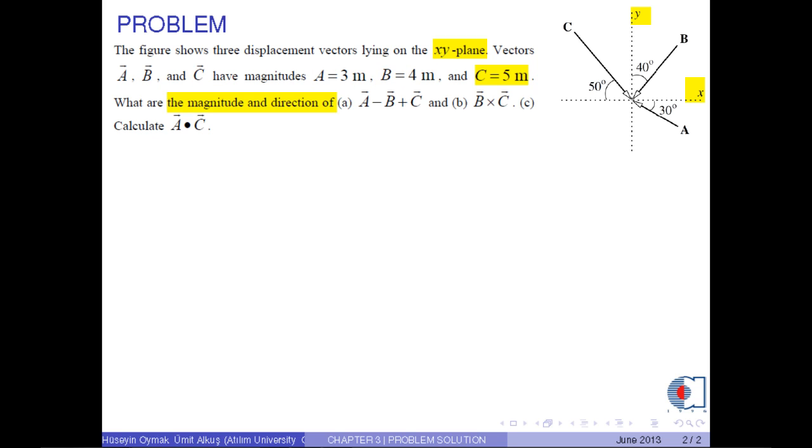What are the magnitudes and directions of A minus B plus C and B cross C? And calculate A dot C.